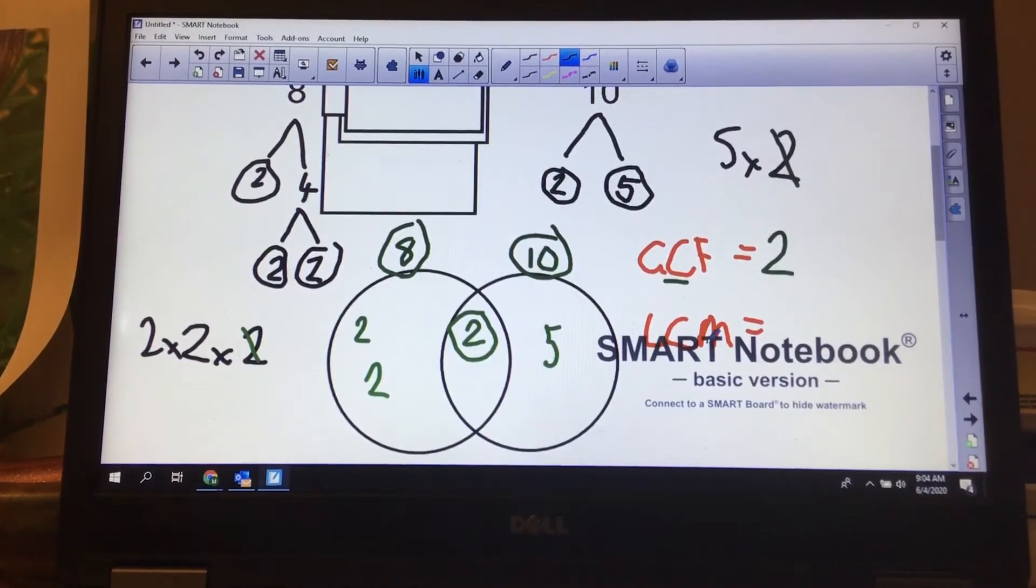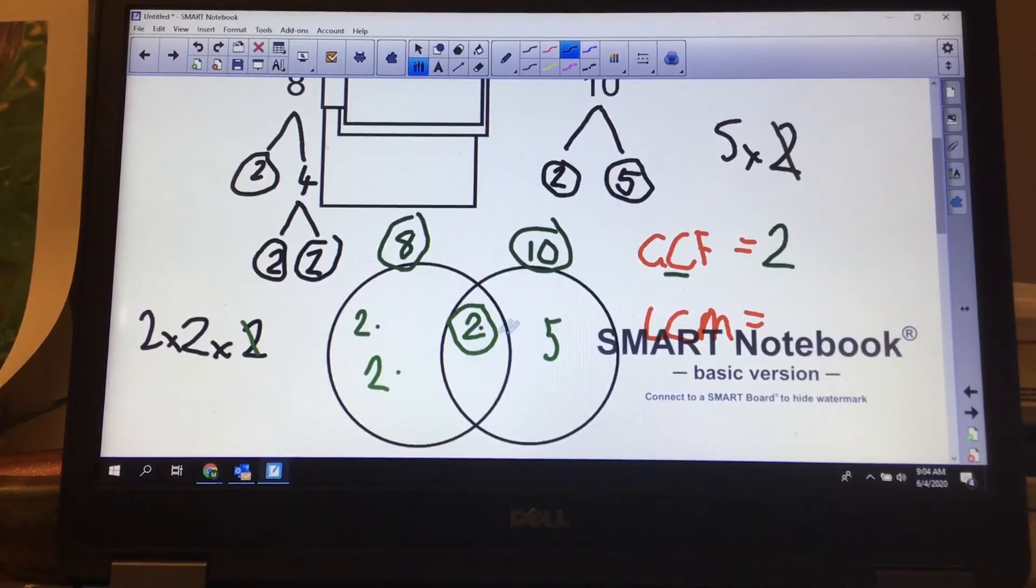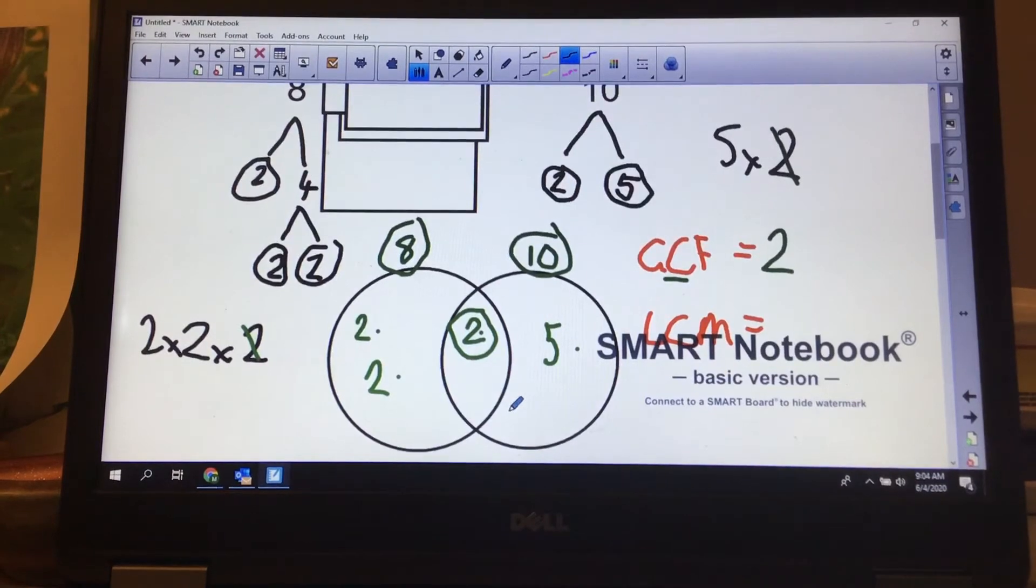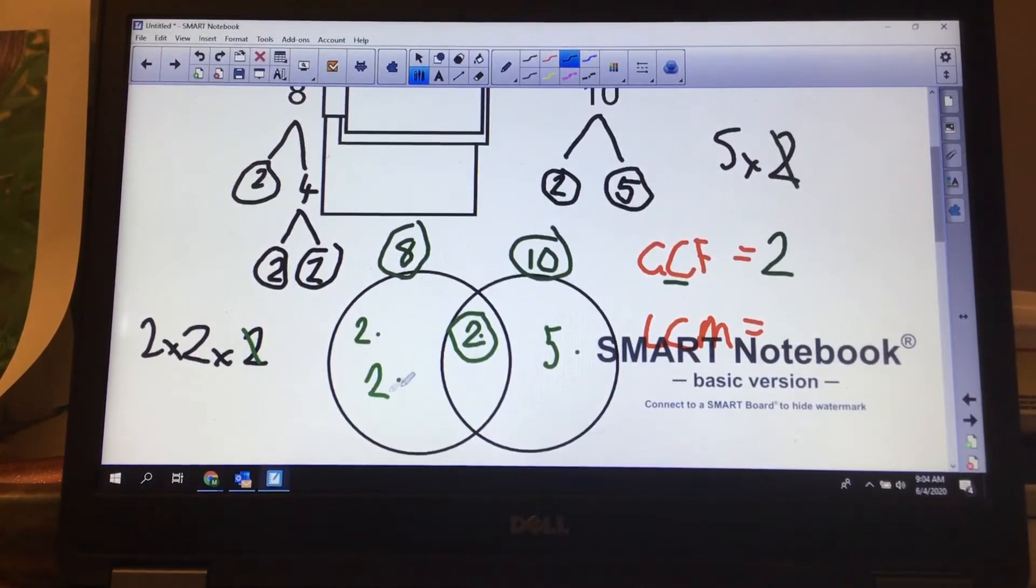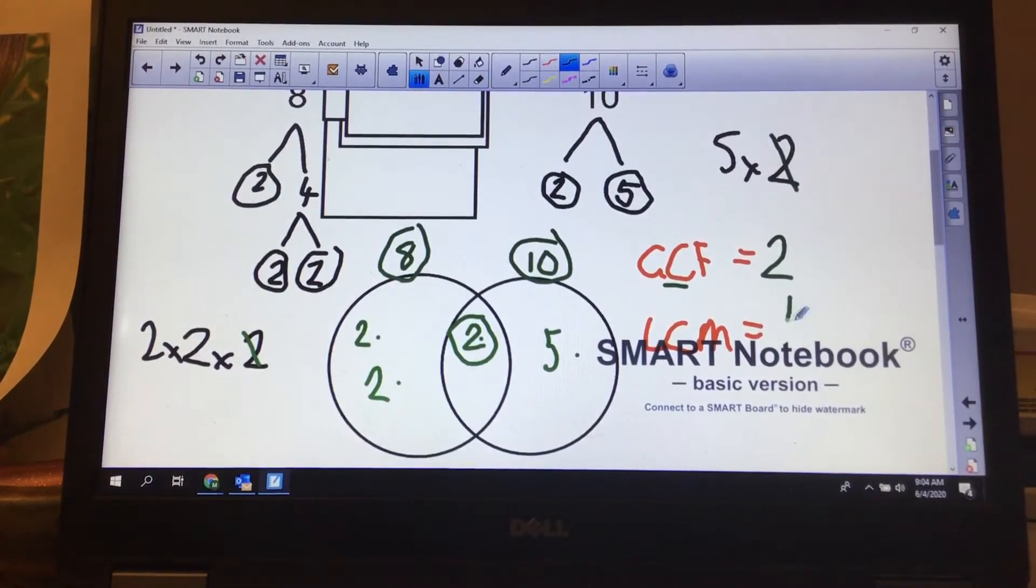To get my least common multiple, I multiply all of my individual digits within my Venn diagram. So 2 times 2 is 4, 4 times 2 is 8, 8 times 5 is 40.